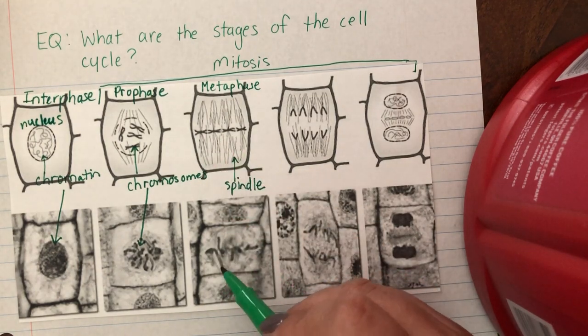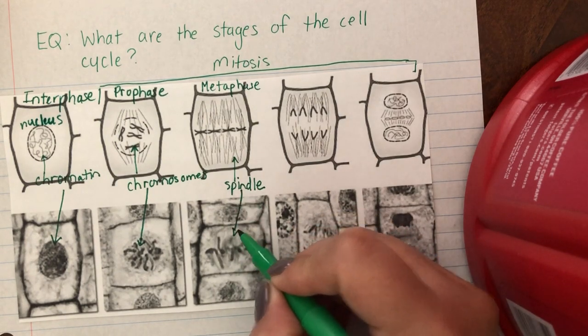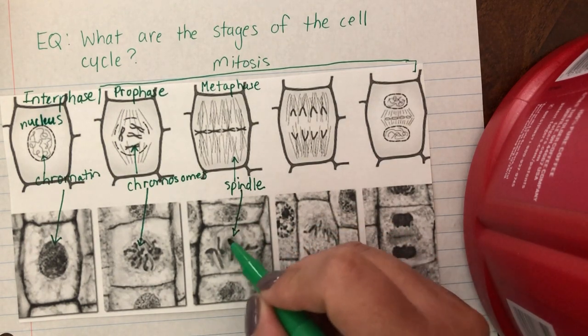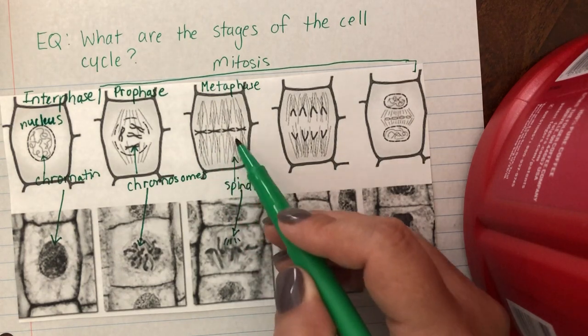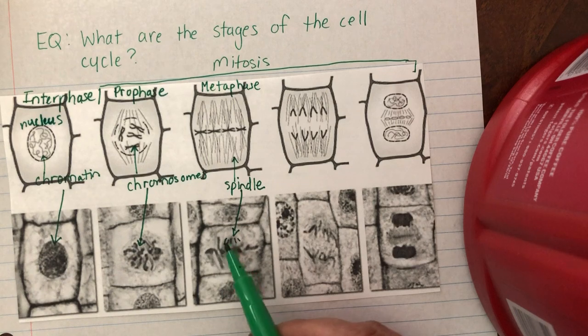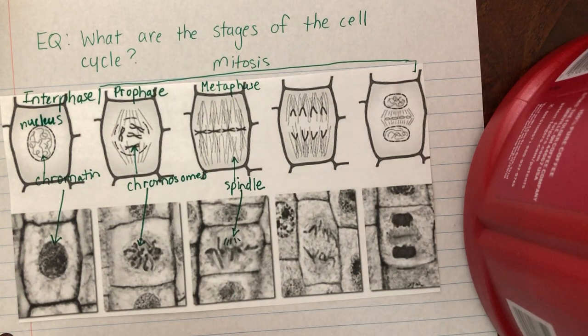Also, the spindle looks more like a blurry image. It's not a perfect spiderweb looking thing over here, but you can see there's something fuzzy here and they look like they're lining up along the middle. The next phase of mitosis is anaphase.